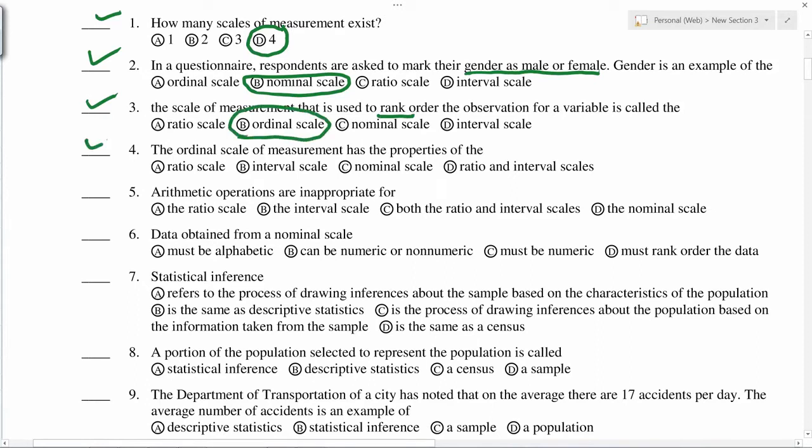Ordinal scale of measurement has the properties of the previous level, which is nominal. So for nominal scale, which is just a name, we cannot do arithmetic operations. Data obtained from nominal scale can be numeric or non-numeric. For example, a student name is non-numeric, it is text, but a student ID is numeric.